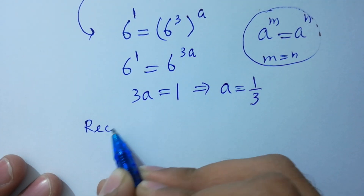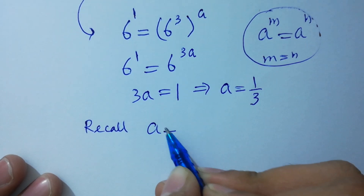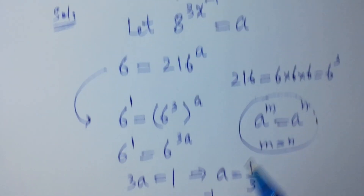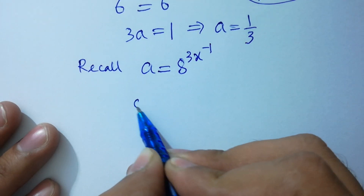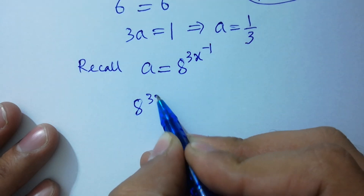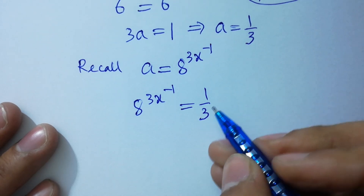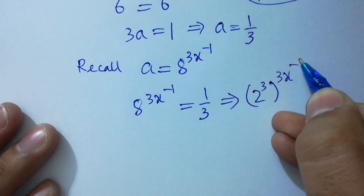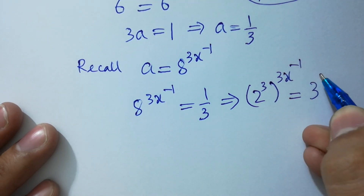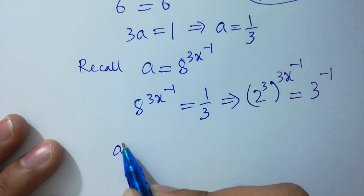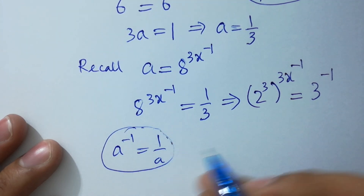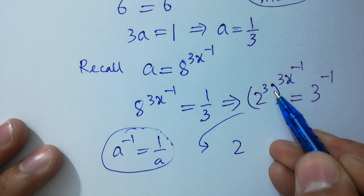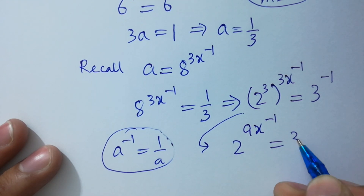Recall: a equals 8 to the power 3x inverse. So, a equals 8 to the power 3x inverse equals 1 over 3. Now, 8 is 2 cubed, so we have 2 cubed to the power 3x inverse, and 1 over 3 can be written as 3 inverse, since a inverse equals 1 over a. So here we have 2 to the power 9x inverse equals 3 inverse.